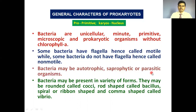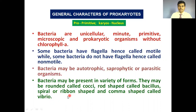Some bacteria are parasitic also. Some bacteria show a variety of forms: some are rounded and called cocci, some are rod-shaped and called bacilli, some are comma-shaped and called vibrio, and some are ribbon-shaped and called spirilla.